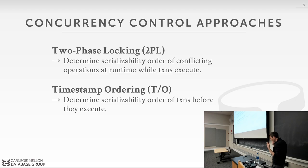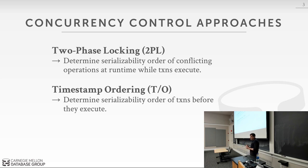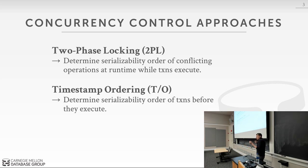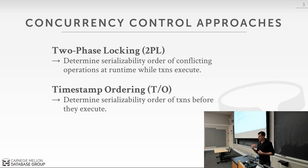Last class covered two-phase locking, which is a runtime protocol the system uses to generate serializable schedules on the fly. In the real world, applications issue requests without giving the database the full schedule ahead of time, so the system must order operations programmatically to avoid conflicts. Timestamp ordering is an alternative approach that produces the same effect — generating serializable schedules at runtime.